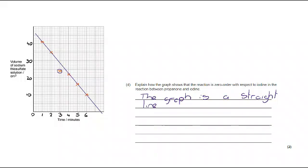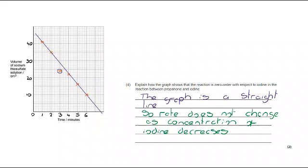The graph is a straight line, even as the concentration of iodine is going down. The iodine is being used up. If the iodine is being used up and the rate isn't slowing down, the concentration of iodine cannot have any impact on rate. So for that reason, it is zero order.